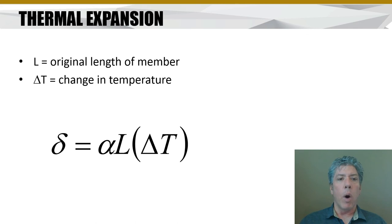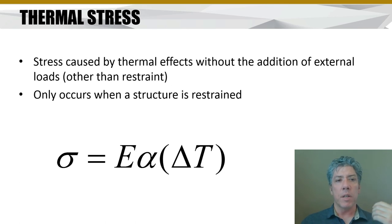If we wanted to quantify how much the expansion would be, then we've got an equation that would do that for us. Delta, the amount of expansion, is equal to the coefficient of thermal expansion alpha, the original length of the member L, and the change in temperature delta T. And this is something you should mark in your book, as well as the coefficient of thermal expansion table I just showed you.